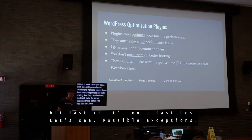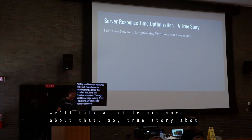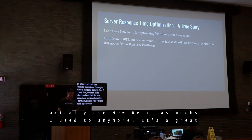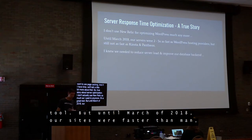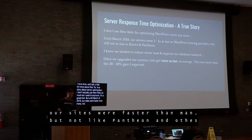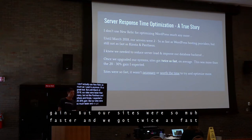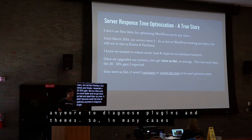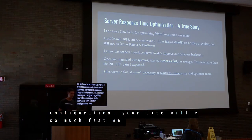The point of these examples isn't necessarily that any of these plugins are bad — it's that New Relic gives you a starting point. You need to figure out what's going on: there could be a new version, something could have been patched, or it might be a configuration option you just need to change. You should use plugins to optimize your WordPress site, but plugins can't optimize your raw site performance — they can't make raw performance faster. You need faster hardware or better configuration for that. They mostly cover up performance issues, and in some cases they actually cause them.